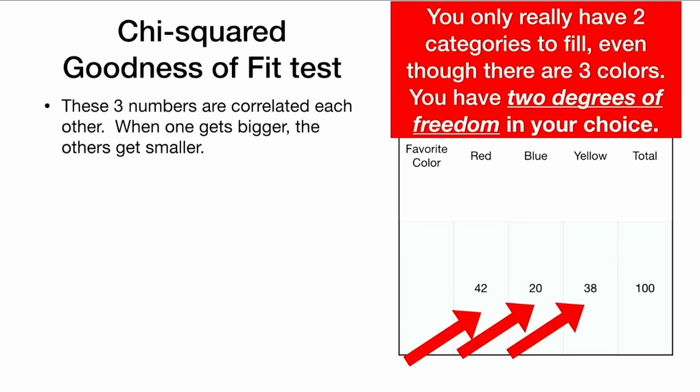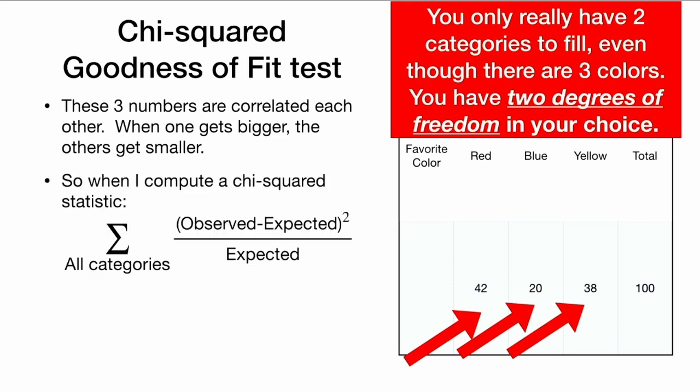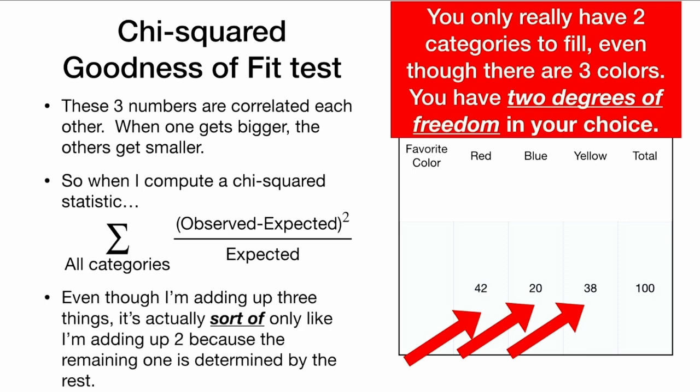These three numbers are correlated with each other — when one gets bigger, the others get smaller. So when we compute a chi-squared test statistic where we sum up the observed minus expected data, even though we're adding up three things, it's actually sort of like we're only adding up two, because the remaining one is determined by the rest. We are actually adding up three things, but they are correlated and we really don't have a choice over the third item.